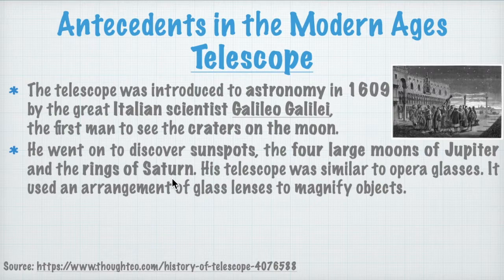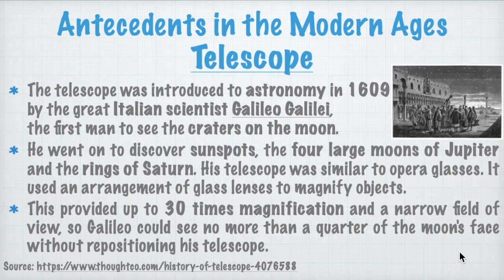His telescope was similar to opera glasses. It used an arrangement of glass lenses to magnify objects, providing up to 30 times magnification but a narrow field of view. Galileo could see no more than a quarter of the moon's face without repositioning his telescope. That's it for the telescope.